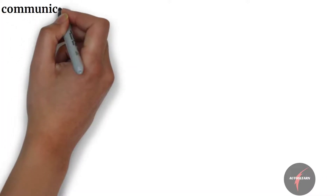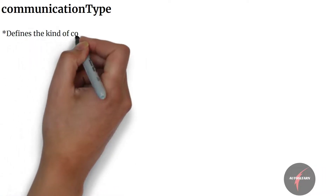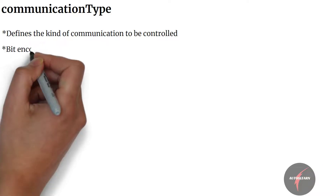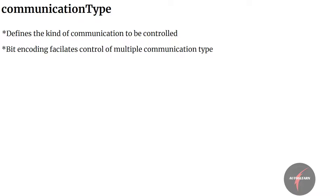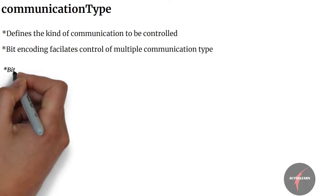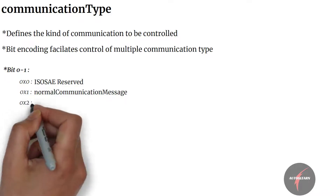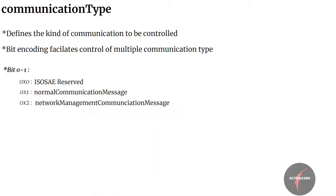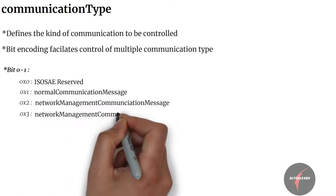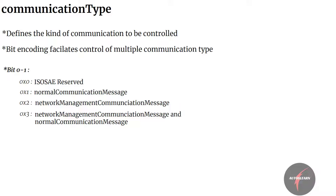Let's now look into the communication type parameter. This parameter is used to refer to the kind of communication to be controlled. Multiple communication types can be controlled at the same time as the control is bit-encoded. Bits 0 to 1 support: value 0 maps to ISO SAE reserved; value 1 maps to normal communication message, referring to all application-related communications; value 2 maps to network management communication message, referring to all network management related communications; and value 3 is a combination of values 1 and 2 — both network management and normal communication messages.